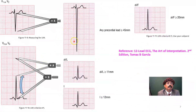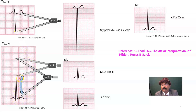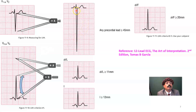Looking at another ECG example: the depth in V1 or V2 is approximately 16 millimeters, and the height in V5 or V6 is approximately 35 millimeters — together totaling 35 or more, a typical picture of left ventricular hypertrophy. Any individual precordial lead measuring 45 millimeters or greater also confirms the diagnosis. This is how we assess left ventricular hypertrophy on ECG.